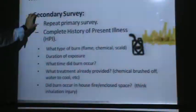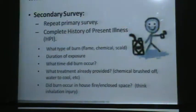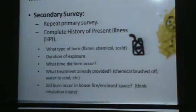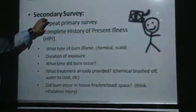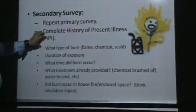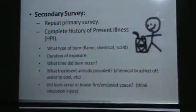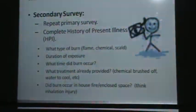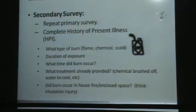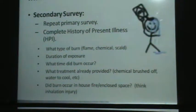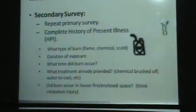For the secondary survey, we first repeat the primary survey — A, B, C, D, E — and then we need an HPI, which is History of Present Illness. This means: what has led to what happened now? How did this happen?